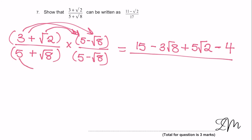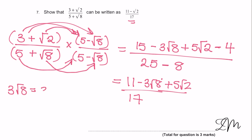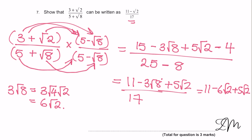On the bottom we use the difference of two squares — just the first and the last — so 25 minus 8 = 17. On the top we've got 11 minus 3√8 plus 5√2. Now, 3√8 is the same as 3√4·√2, and √4 is 2, so we get 6√2. So we have 11 minus 6√2 plus 5√2, and minus 6 plus 5 gives minus 1. So our final answer is (11 minus √2) over 17.